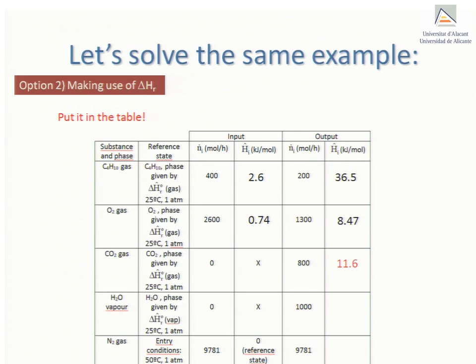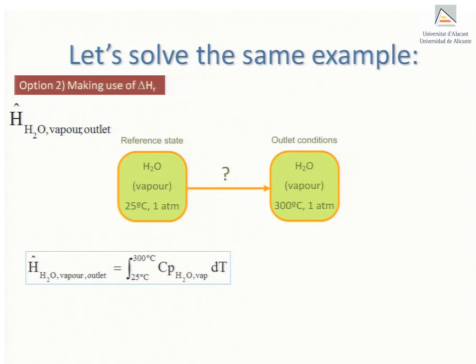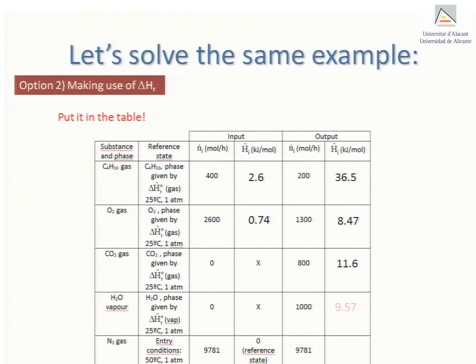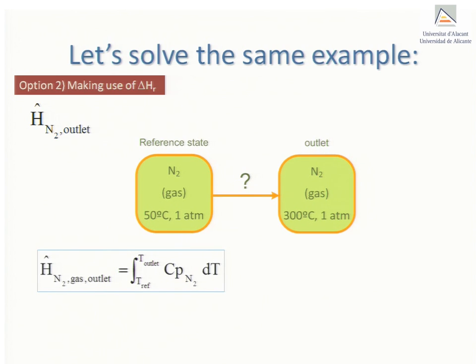As for the water in the outlet, during the corresponding calculations while keeping in mind that the reference state is water vapor at 25 degrees C and 1 atmosphere, we obtain a molar enthalpy of 9.57 kJ per mole. Finally we come to the nitrogen in the outlet. We obtain exactly the same result as we did in option one seen in part one of this video lesson, 7.4 kJ per mole. This completes our table.